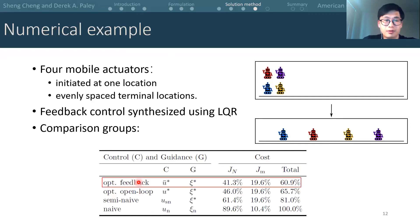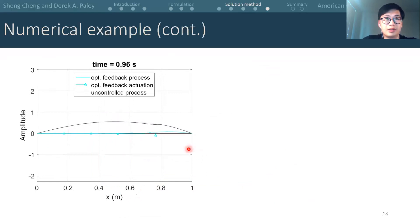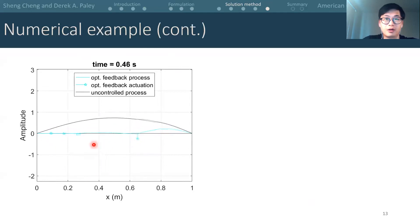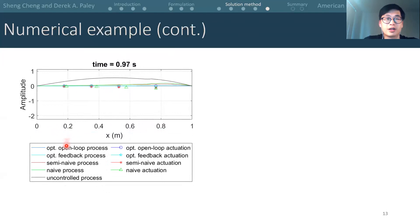As can be seen, the optimal feedback group has the minimum total cost compared to the other three. Notably, this group incurs smaller approximated PDE-related cost than the optimal open loop group, due to the capability of feedback. The animation shows the optimal feedback control implemented by the mobile actuators steered by the optimal guidance. The locations of the actuators are shown by the light blue stars, while the controlled process is shown in the light blue curve. For comparison, we show the uncontrolled diffusion in the black curve. Another animation shows the comparison of guidance, actuation, and the corresponding PDE in the four groups.